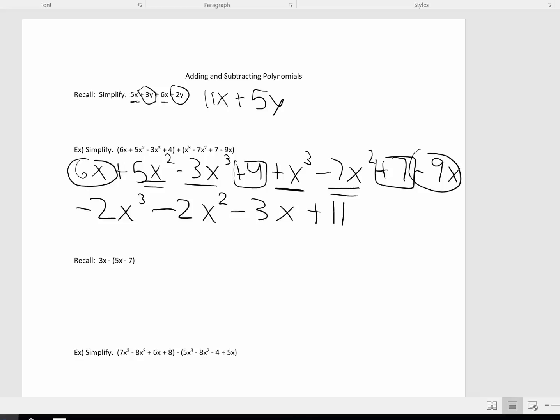So I would rewrite the 3x. Negative 1 times 5x is negative 5x. Negative 1 times a negative 7 is positive 7. And now we just combine like terms. So 3x minus 5x is negative 2x. And bring down the positive 7.